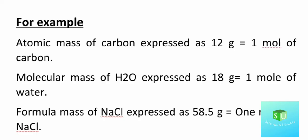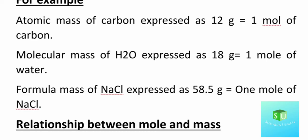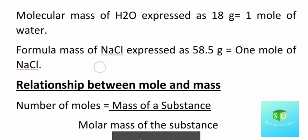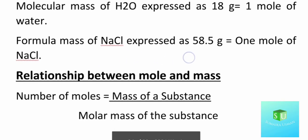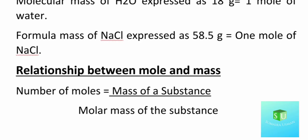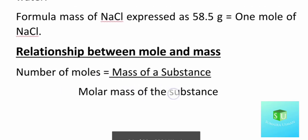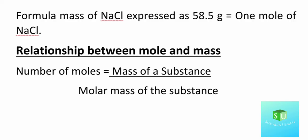For example, the atomic mass of carbon is 12; expressed as 12 grams, this equals 1 mole of carbon. For 2 moles of carbon you multiply by 2, and for 3 moles you multiply by 3. The molecular mass of water is 18; expressed as 18 grams, this equals 1 mole of water. For a formula unit like NaCl: its mass is 58.5 grams, which equals 1 mole. The relationship between mole and mass: number of moles equals mass of substance divided by molar mass. You must mention this formula in a long question answer.